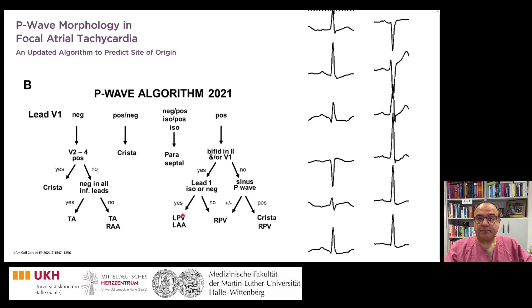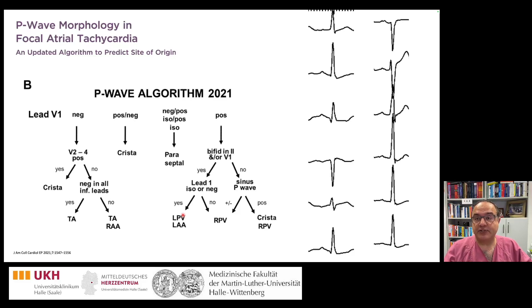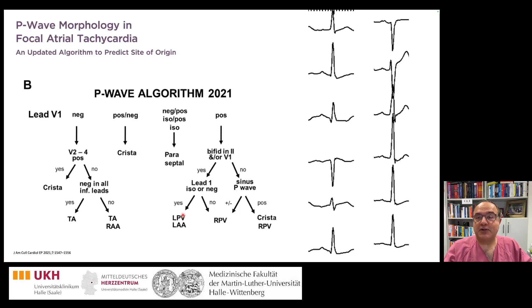It is very difficult to map these premature atrial contractions, especially automatic mapping of PACs when the coupling interval varies from beat to beat. However, one approach that can help is automatic mapping and ablation using a multi-electrode mapping catheter.